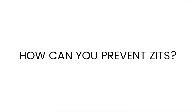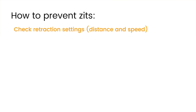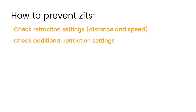So how do you stop zits from happening? If you think it's due to retraction problems, check your retraction settings — look at your retraction distance and your retraction speed and make sure that those are calibrated. Next, look at other retraction settings or settings that will replace a retraction with a different movement. The first one of these is combing.